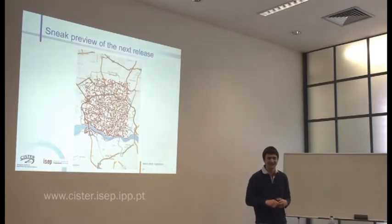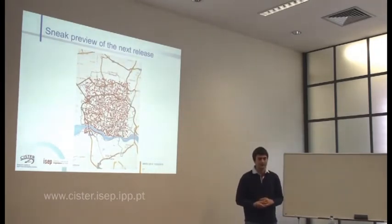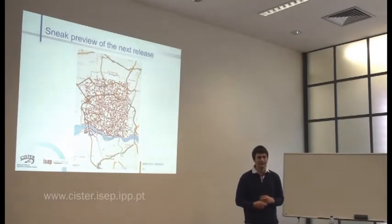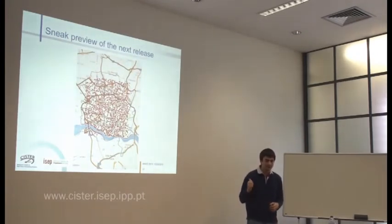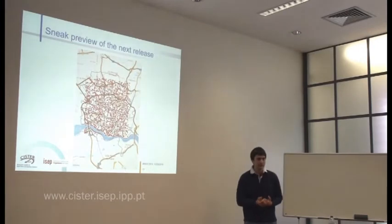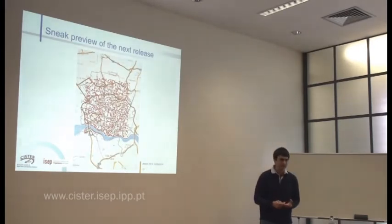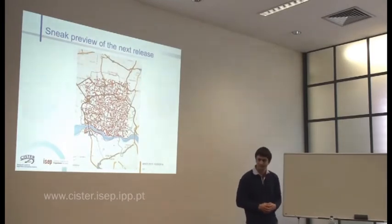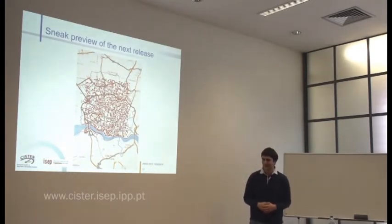An audience member asks whether the Google Maps API supports indoor navigation — noting that some buildings in Google Maps show corridors, auditoriums, and bathrooms when zoomed in. The presenter responds that the Directions API does not support indoor navigation, as the module was focused mainly on vehicular network research. However, the module can also apply to indoor network research as it models public transportation and walking directions.